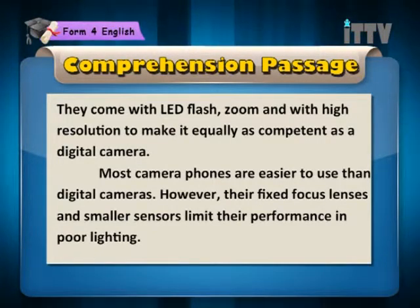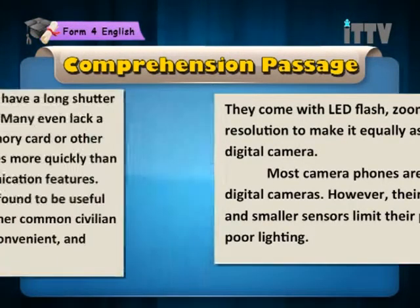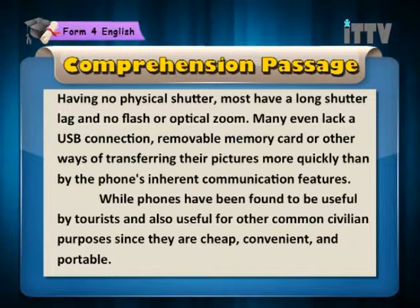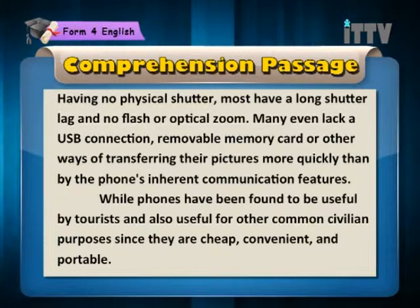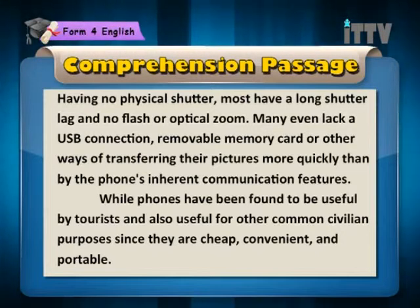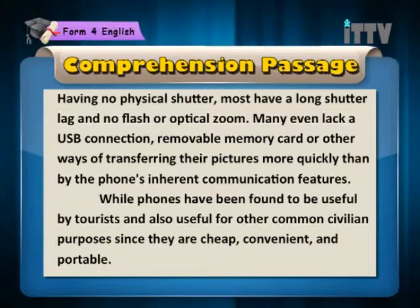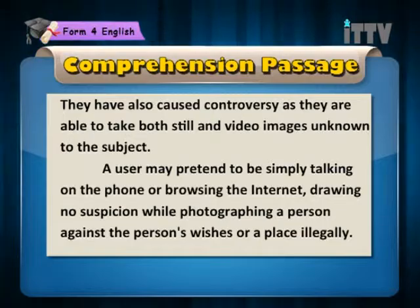Most camera phones are easier to use than digital cameras. However, their fixed focus lenses and smaller sensors limit their performance in poor lighting. Having no physical shutter, most have a long shutter lag and no flash or optical zoom. Many even lack a USB connection, removable memory card or other ways of transferring their pictures more quickly than by the phone's inherent communication features. While phones have been found to be useful by tourists and also useful for other common civilian purposes since they are cheap, convenient and portable, they have also caused a controversy as they are able to take both still and video images unknown to the subject.